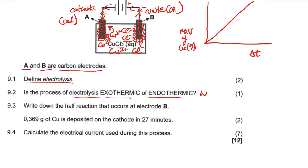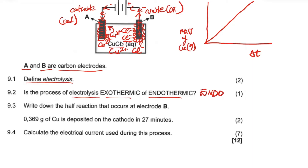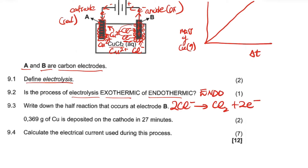The process of electrolysis is endothermic, because we are adding energy and converting electrical energy into chemical energy. For question 9.3, the half-reaction at electrode B (the anode, where oxidation occurs) is: 2Cl⁻ → Cl₂ + 2e⁻. Two chloride ions release two electrons to form chlorine gas.